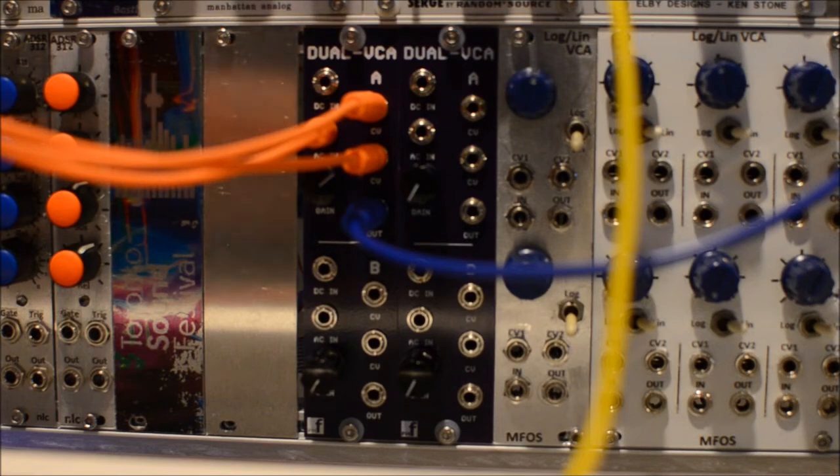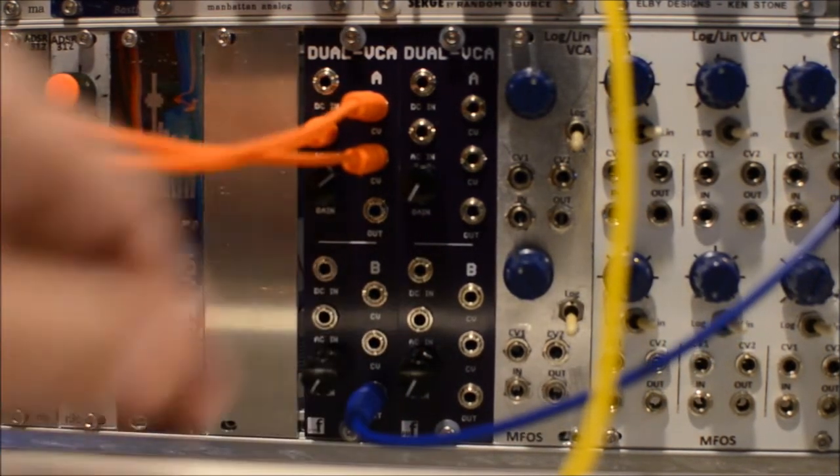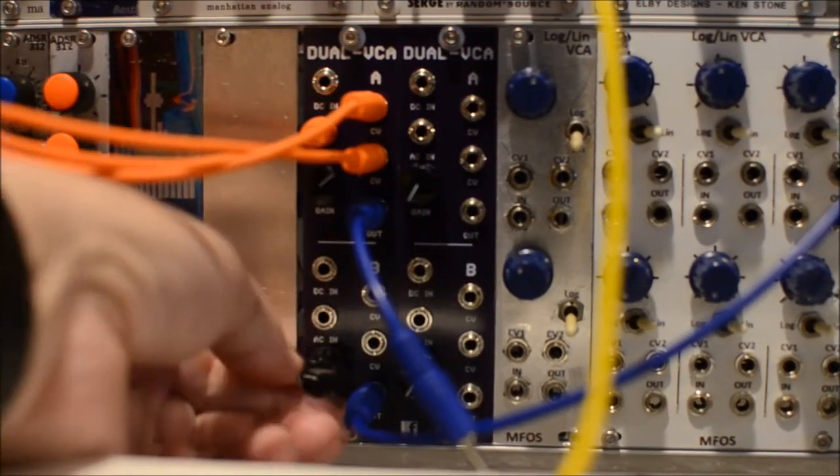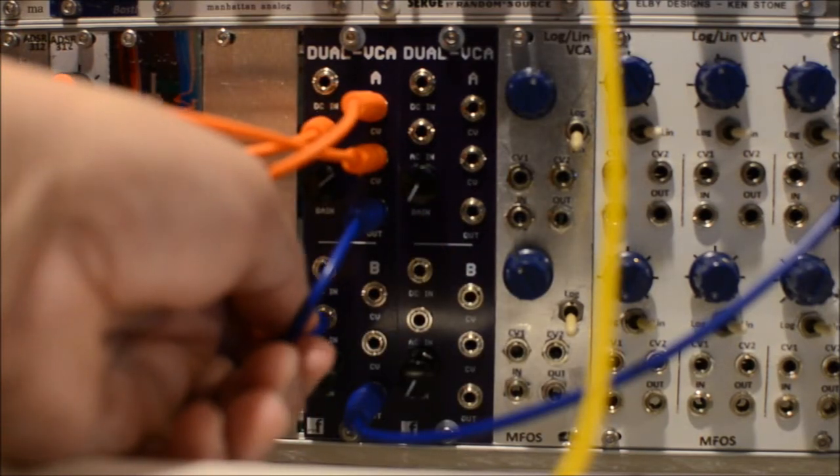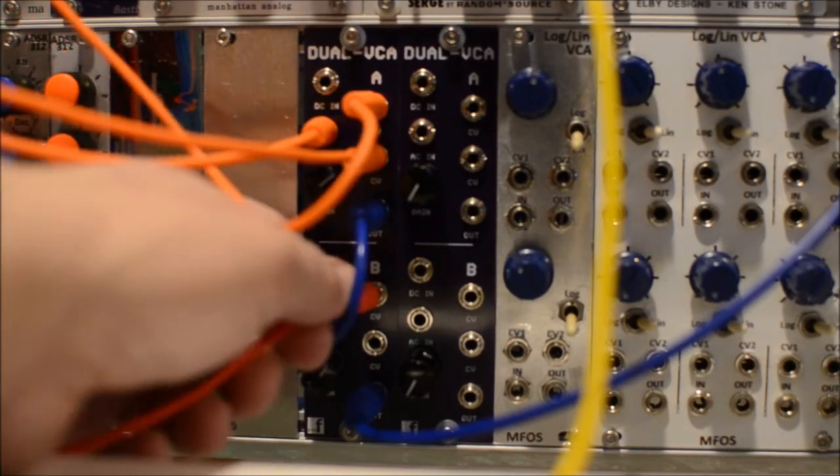And since we have a dual VCA, we could run from one to the other. Kick that up a little bit with the volume. Put our envelope generator back in, and we can still have an envelope.